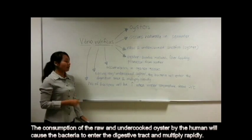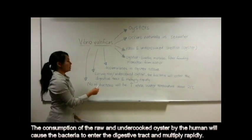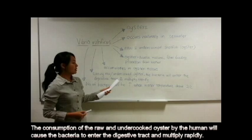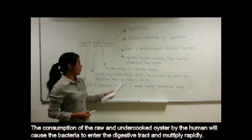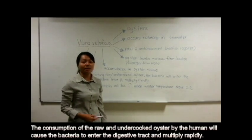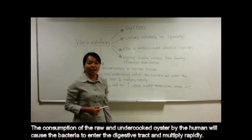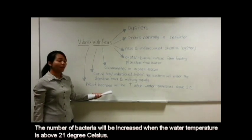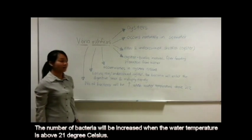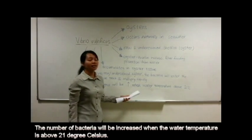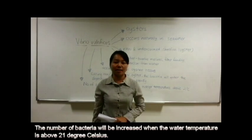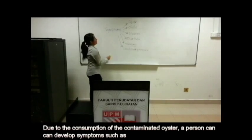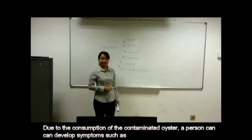The consumption of raw and undercooked oyster by humans will cause the bacteria to enter the digestive tract and multiply rapidly there. The number of bacteria will increase when the water temperature is above 21 degrees Celsius.